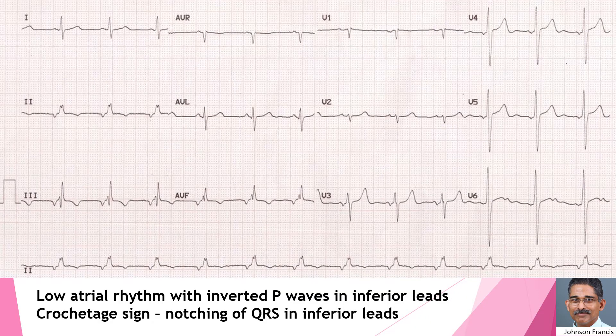This ECG shows inverted P waves in inferior leads, suggestive of low atrial rhythm. In addition, there is the crochet touch sign, which is the notching of QRS complexes in inferior leads. The crochet touch sign is thought to be an important sign on ECG for atrial septal defect.